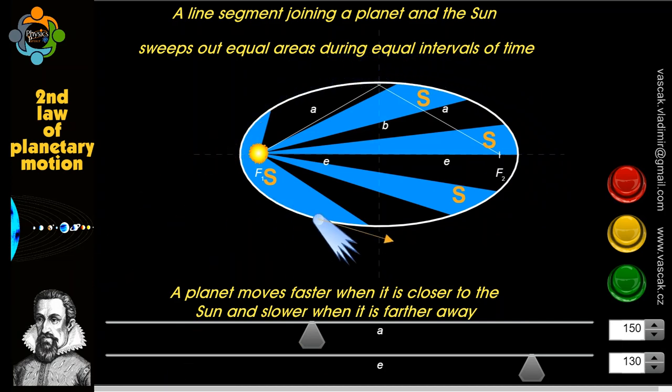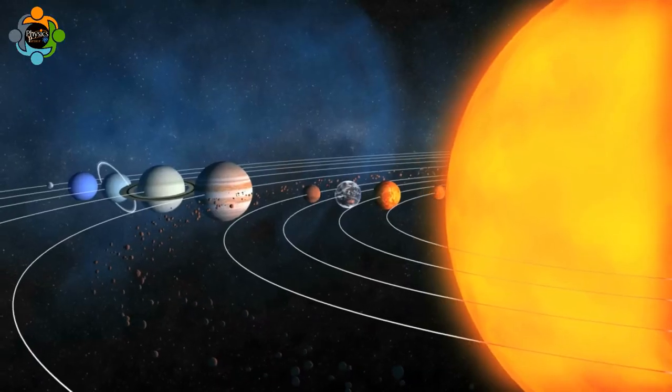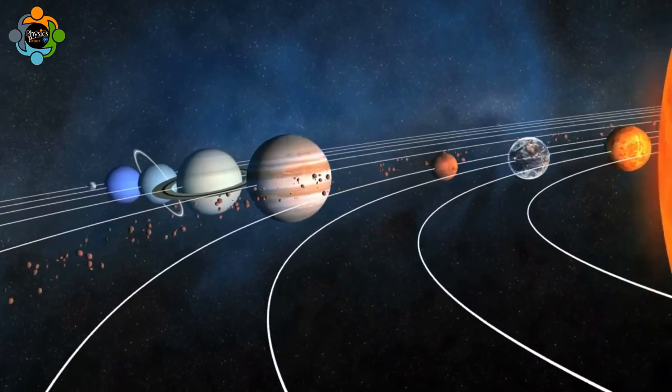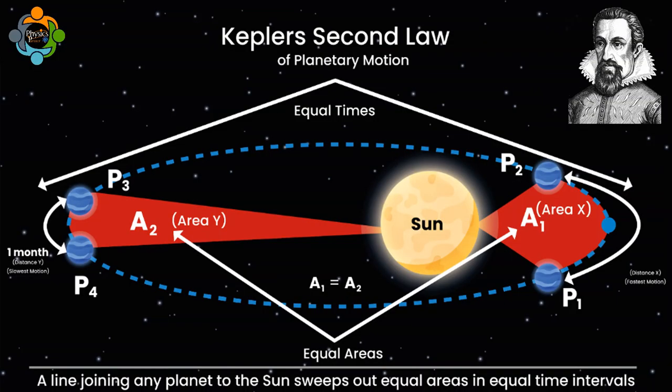In simpler terms, this means that the planet moves faster when it's closer to the Sun and slower when it's farther away. This concept is crucial in understanding the elliptical orbits of planets and predicting their positions accurately.